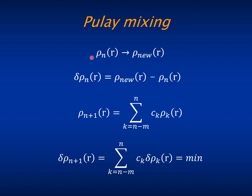If you have some input density at the nth step of the cycle and the output is rho_n, we can define the difference between the output and input densities as the residual difference. What you would like is that the residual would be zero, because then the output and input densities would be equal and you would be finished.